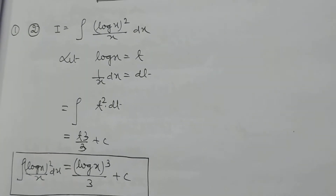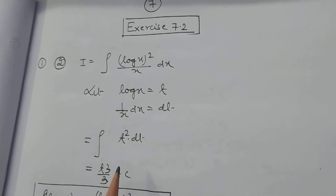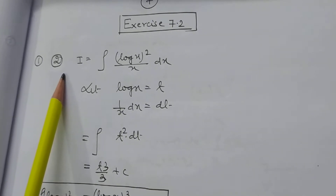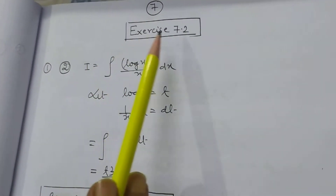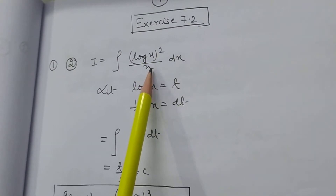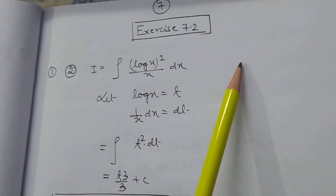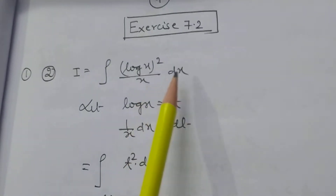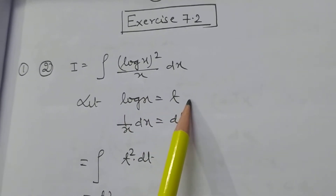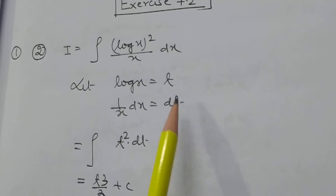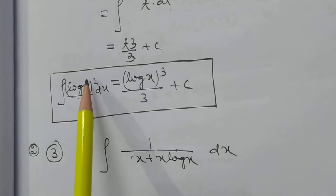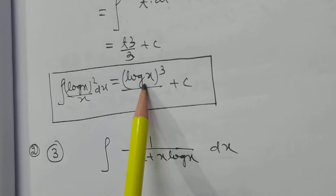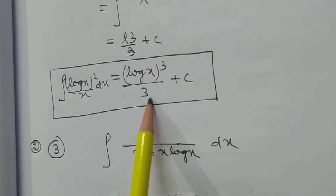Now I want to solve some problems from Exercise 7.2 of NCERT, which also appeared in board examinations. Problem: integration of (log x)²/x dx. Let log x = t, so 1/x dx = dt. The integral becomes t²dt = t³/3 + c. So integration of (log x)²/x dx equals (log x)³/3 + c.